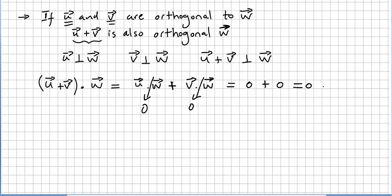And that concludes the proof. If a vector is orthogonal to another vector, and another vector v is orthogonal to the same vector w, adding two orthogonal vectors, you get an orthogonal vector.